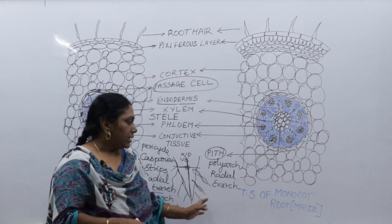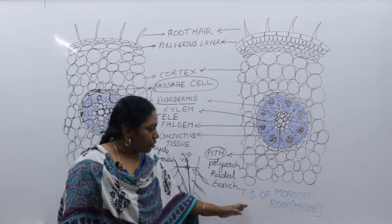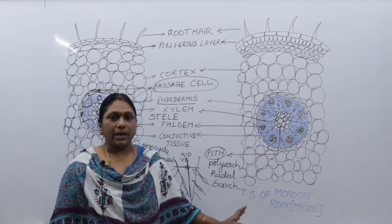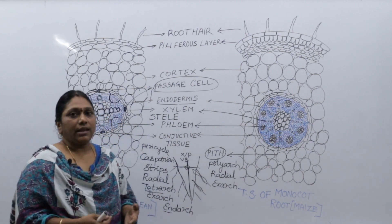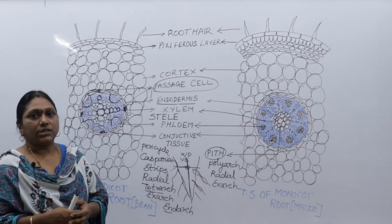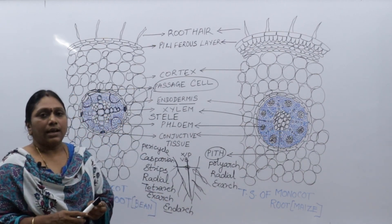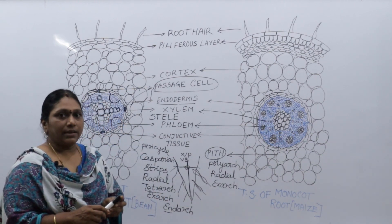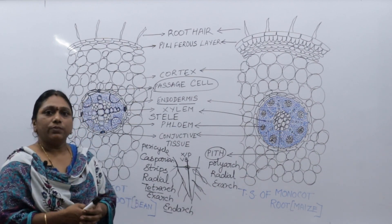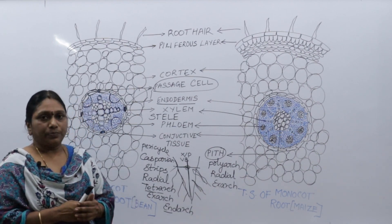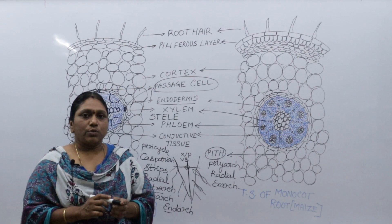So this is regarding TS of dicot root (beans) and TS of monocot root (maize). If any doubt is there, you can post in the description box and your doubts will be cleared. Any queries, please feel free to post. Thank you.